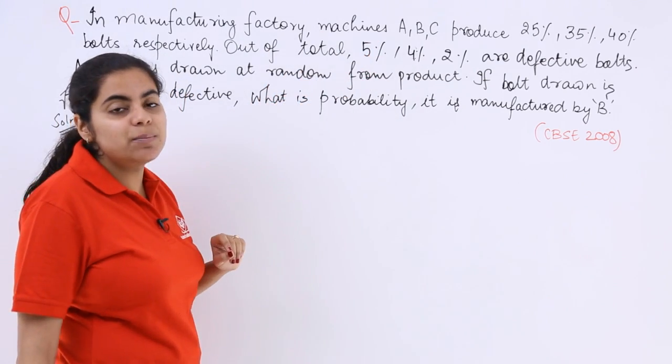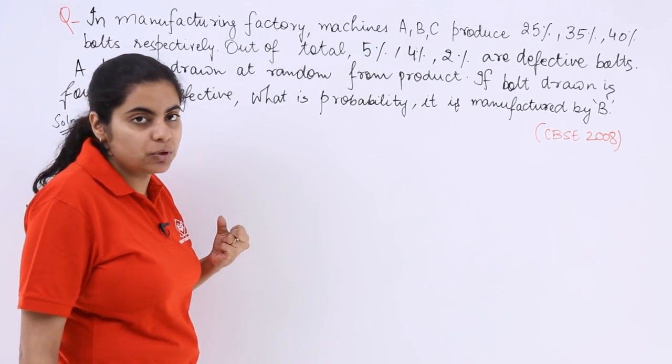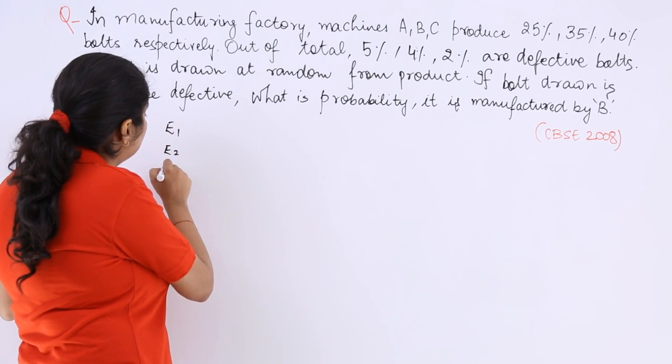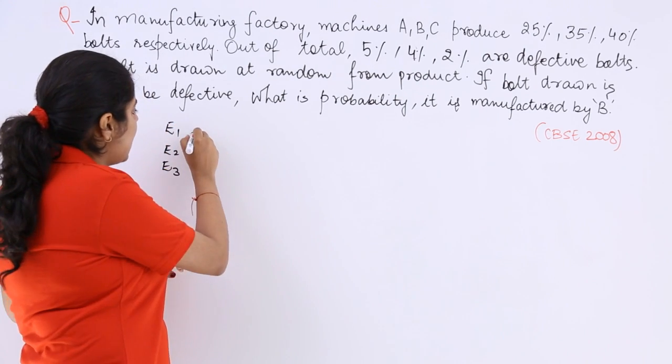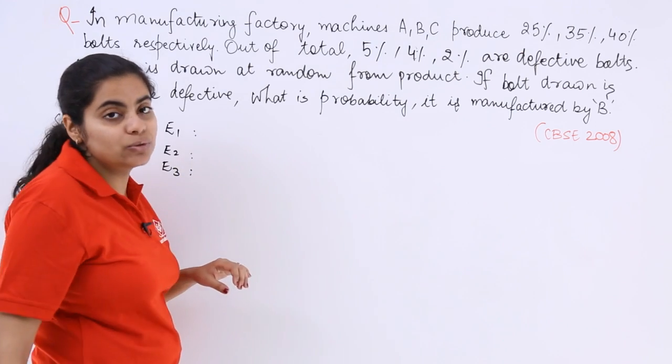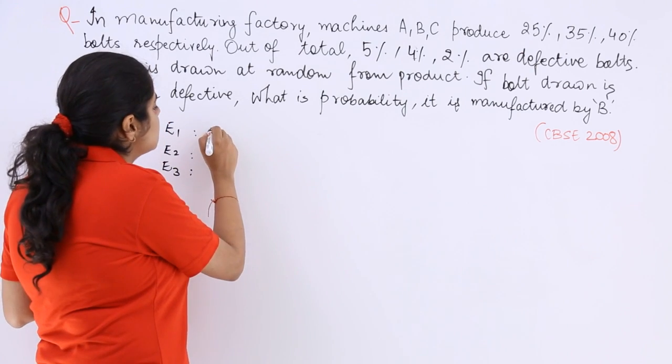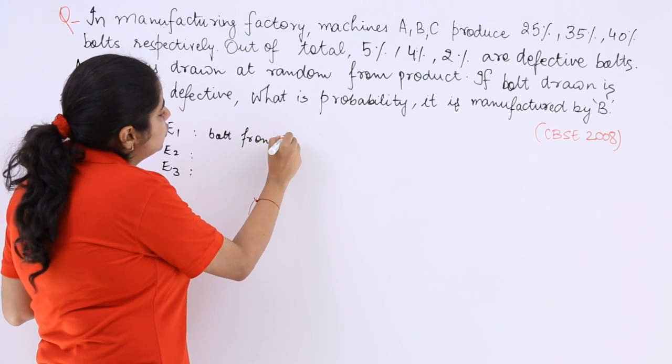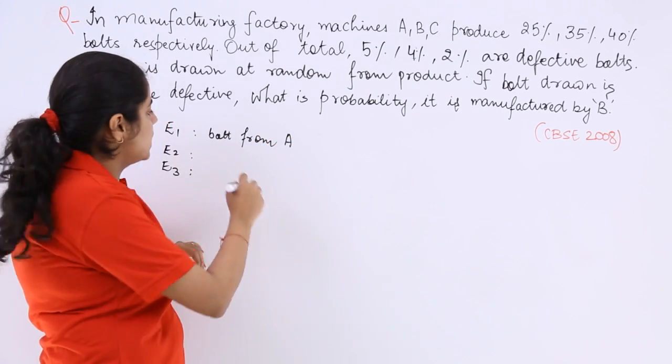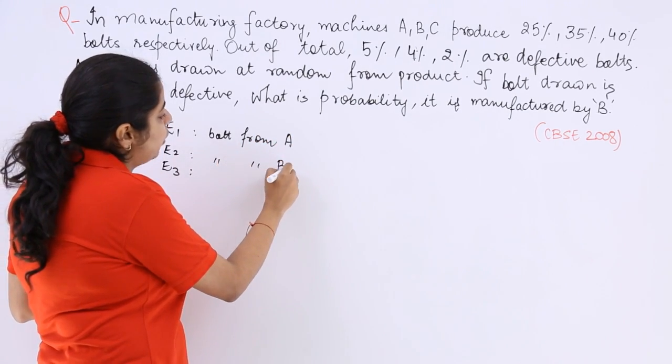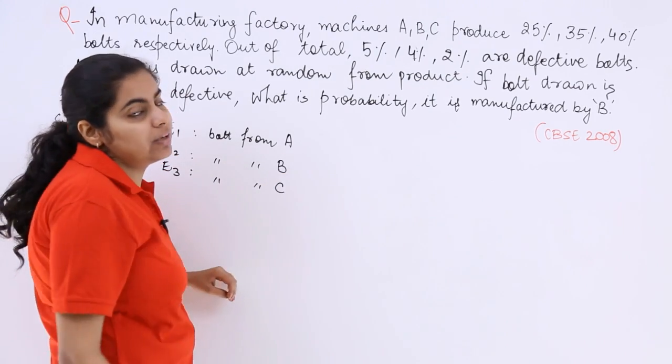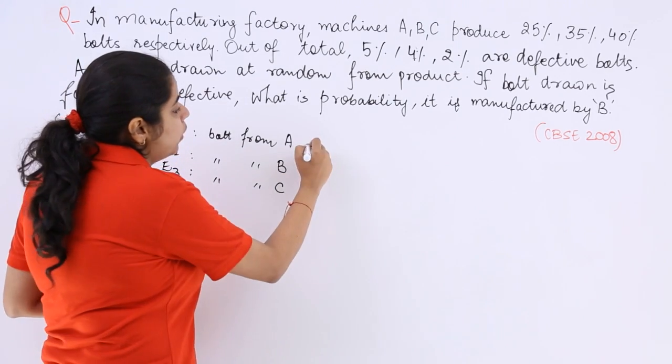I know that machines A, B, C are producing certain products. Let me name E1, E2, and E3 as different events. E1 says the bolt is manufactured from machine A, E2 says bolt manufactured from machine B, and E3 is bolt manufactured from machine C.